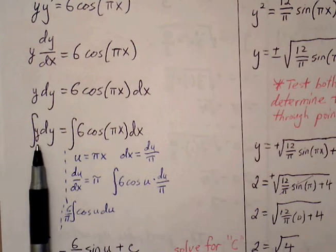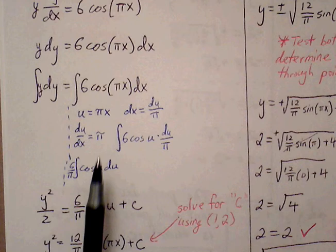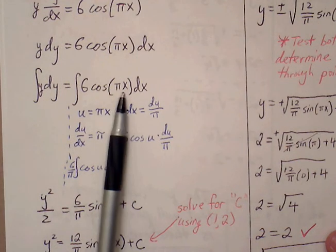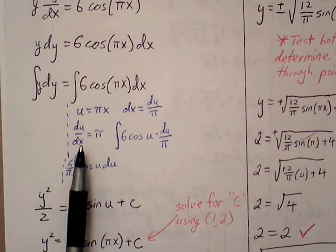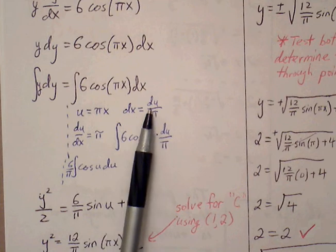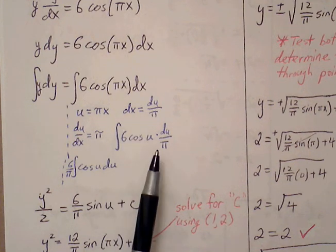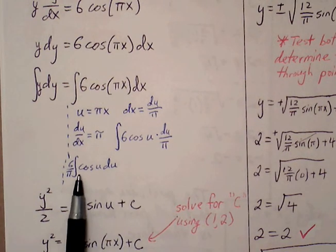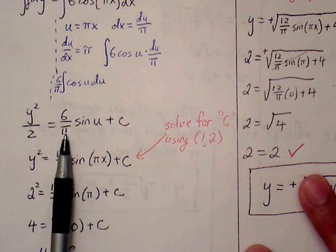Take the indefinite integral of both sides. The integral of y dy equals the integral of 6 cosine(πx) dx. The left side by power rule gives y squared over 2. For the right side, we need u-substitution because we have πx, not just x — this will produce a coefficient. Let u equal πx, so du equals π dx, meaning dx equals du over π. Substituting: πx becomes u and dx becomes du/π. We pull 6/π out as a coefficient, leaving the integral of cosine u, which equals sine u. So we have 6/π times sine u plus c.